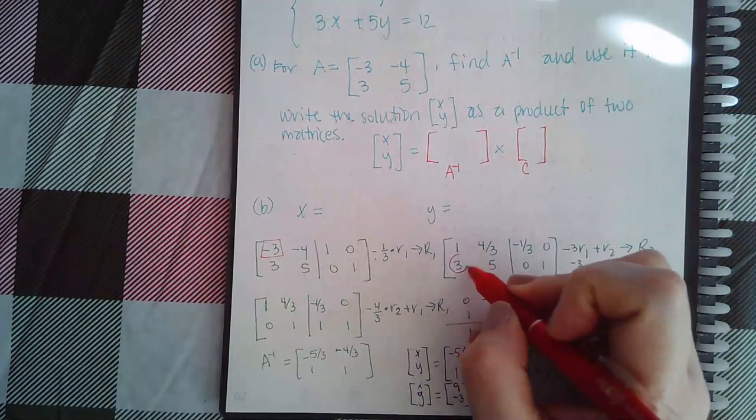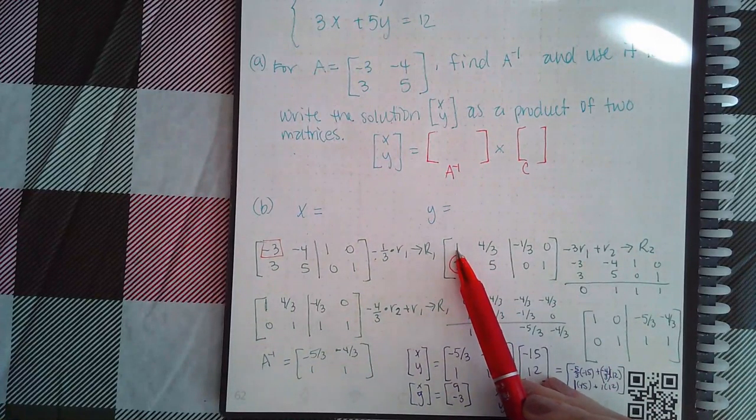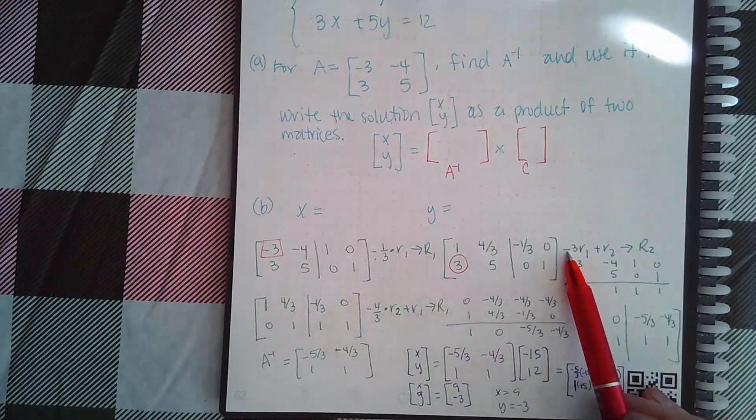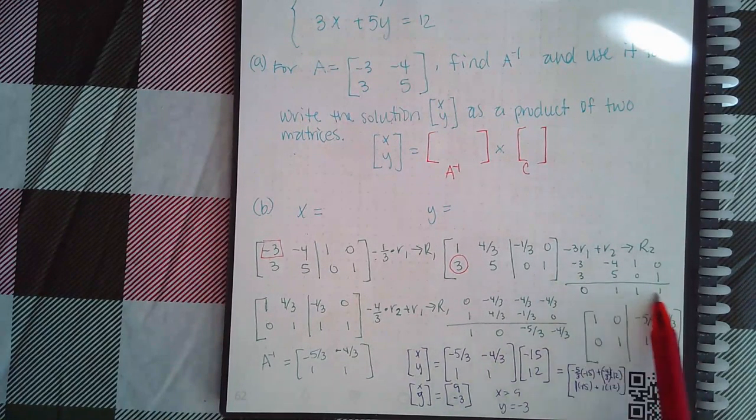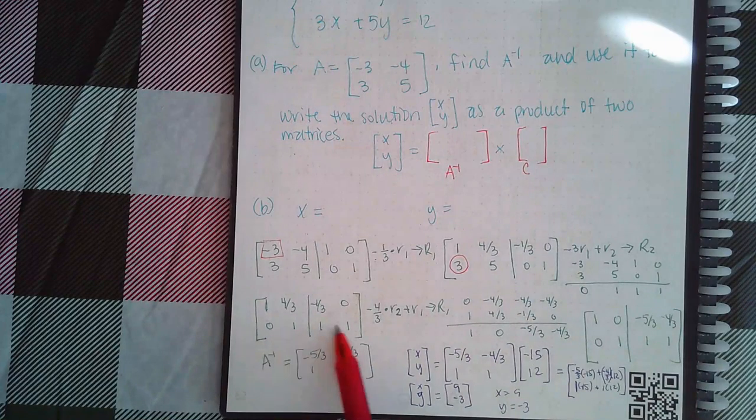Then we wanted to change this guy into a zero, so we needed that to go back to a negative three temporarily. So negative three times row one plus row two to give us the new row two. So this became new row two. And row one stayed.